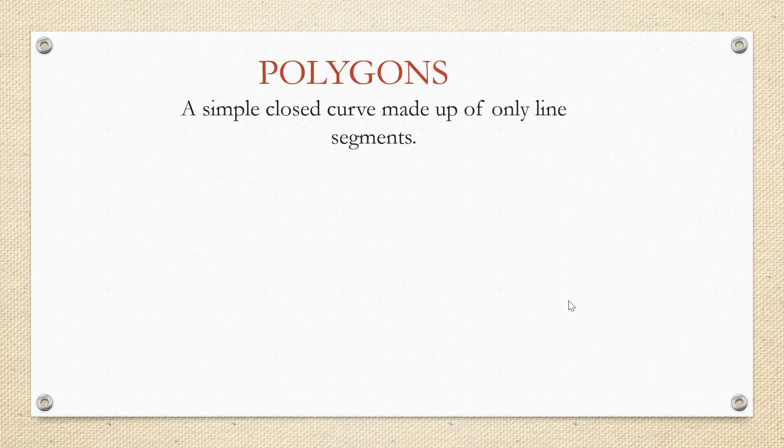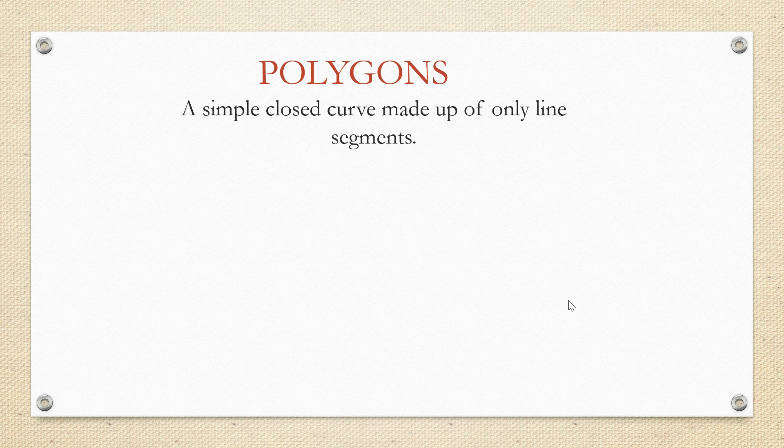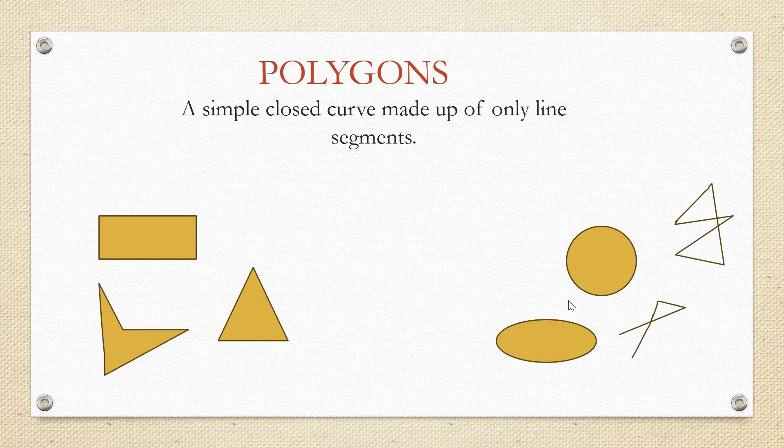Polygon. A simple closed curve made up of only line segments is called a polygon. For example, if we have two sets of drawings here, the first set has all closed figures and the lines are straight. So such figures are called polygons.